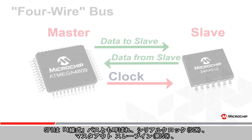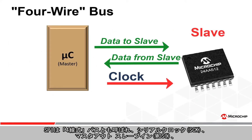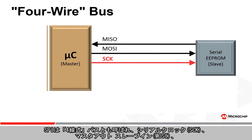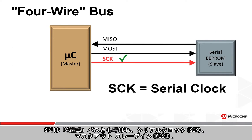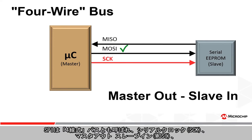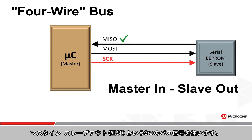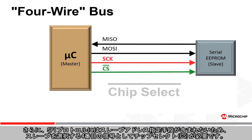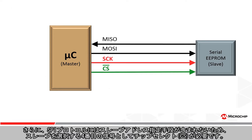SPI is also referred to as a four-wire bus as there are three bused signals: serial clock or SCK, master out slave in or MOSI, and master in slave out or MISO. But because SPI does not include a slave addressing method in the protocol, a fourth signal is needed to select each slave.